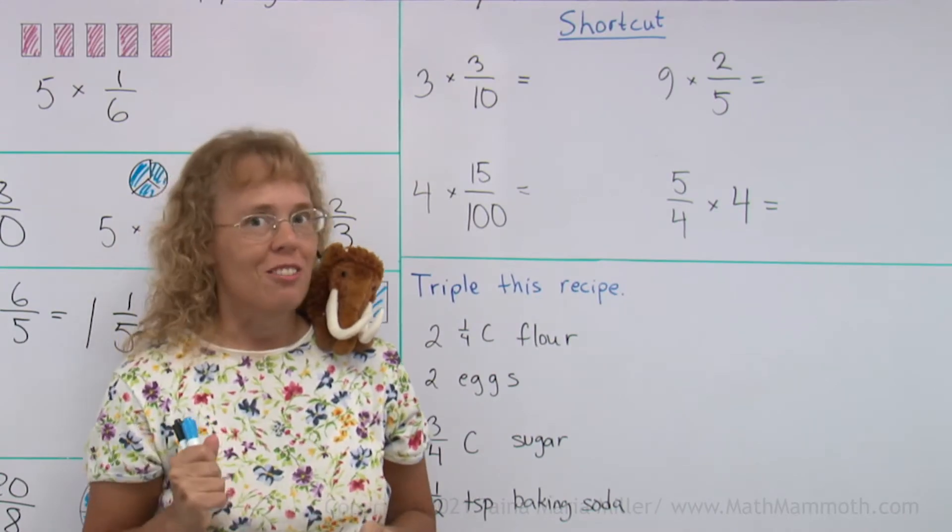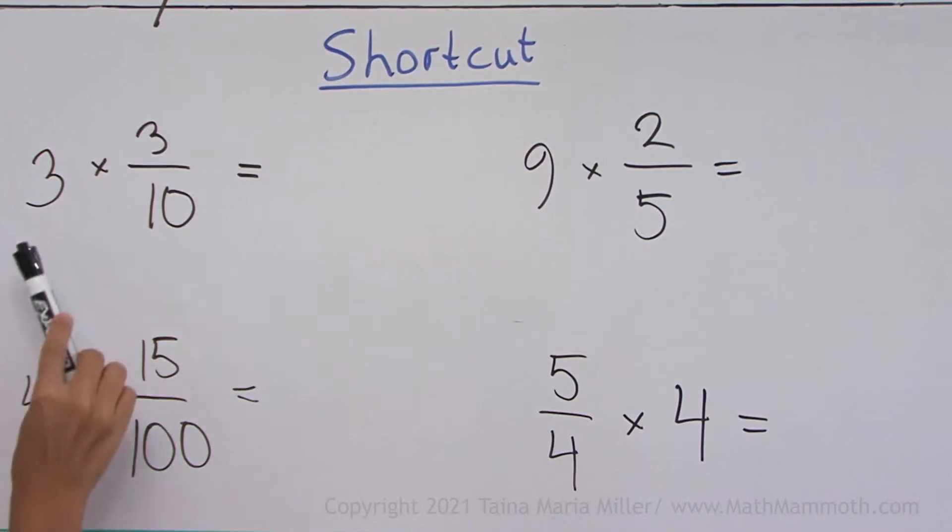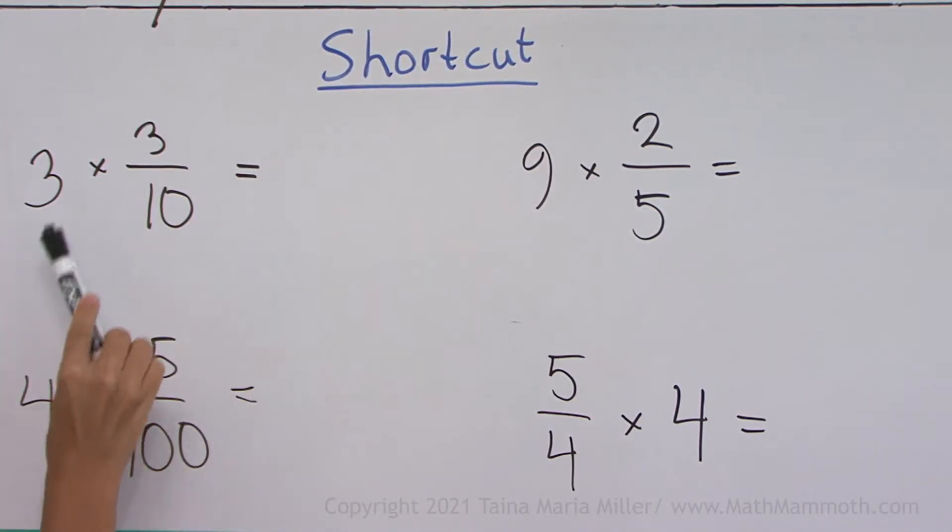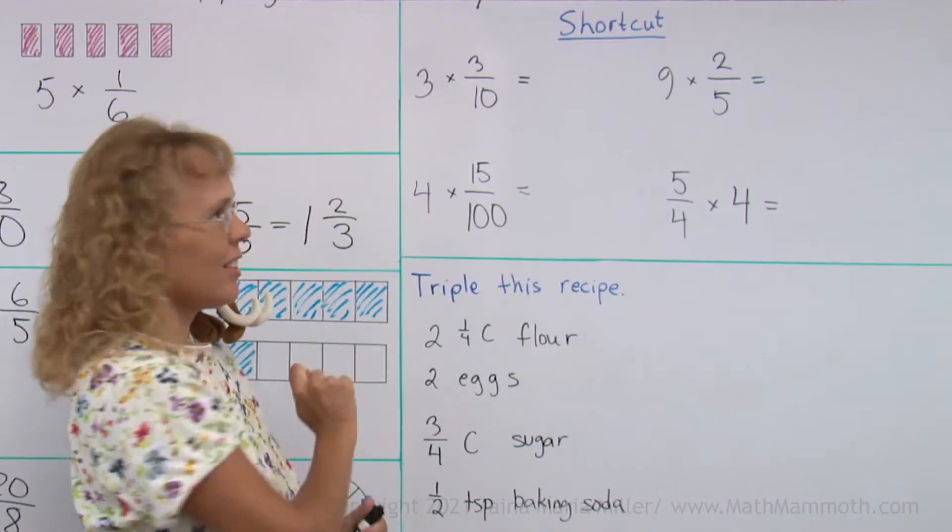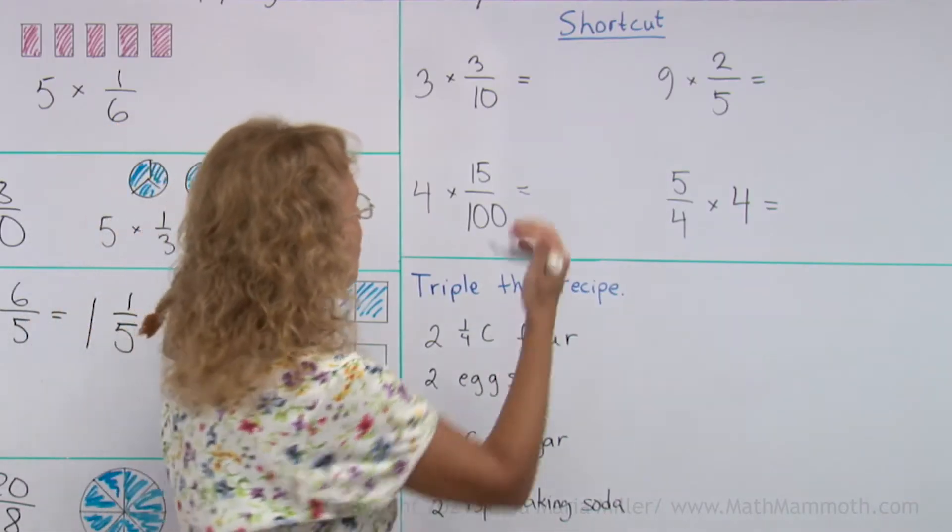Alright, I hinted at the shortcut already. We have 3 times 3 tenths. I told you that we can just multiply 3 times 3 to find the total number of those kind of parts. You multiply 3 times 3 and that's how many tenths you will get. So the answer is just 9 tenths.